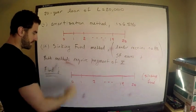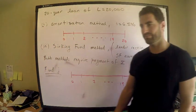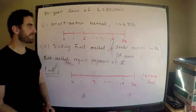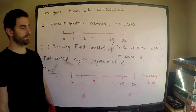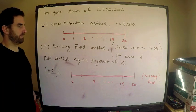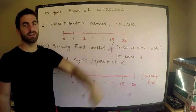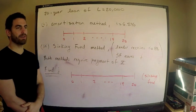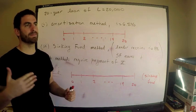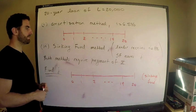I want to cover this example on sinking funds. It used to scare me — anytime you hear something new you're like 'what the hell is that?' But it's not too complicated. Here are the details: we have a 20-year loan and the loan amount is $20,000. We have two options: we can pay this back using amortization — making a series of payments where each payment consists of part principal, part interest — or we can use the sinking fund method.